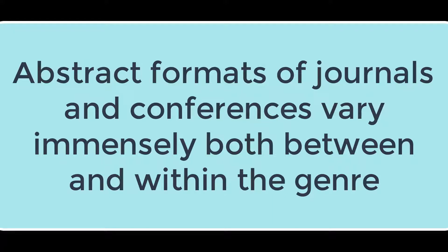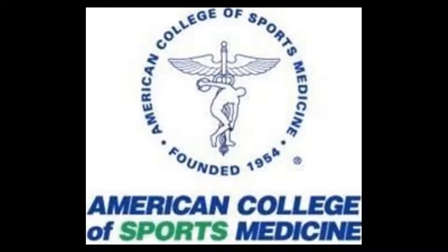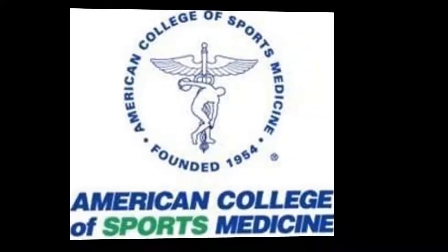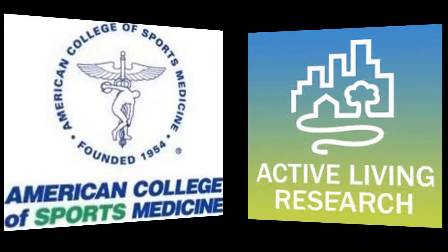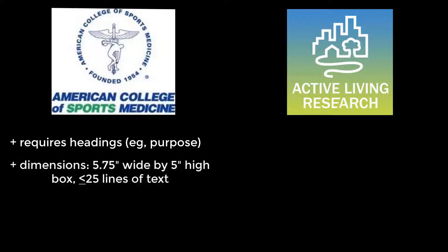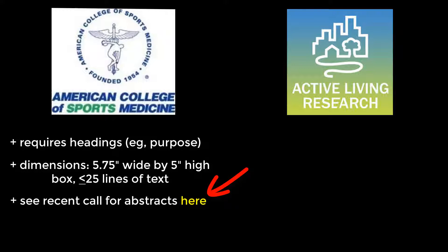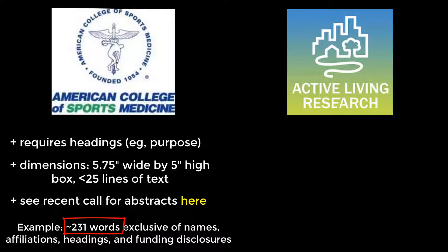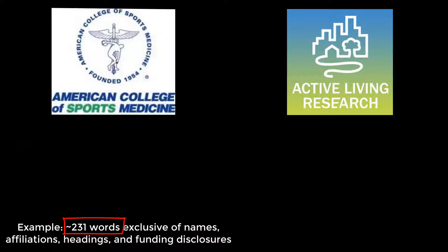For example, let's consider two conferences: the Southeast Chapter of the American College of Sports Medicine Regional Conference and Active Living Research Annual Conference. The first one requires the abstract to have headings, the dimensions of the box to be 5.75 inches wide by 5 inches high with less than 25 lines of text. You can click here to see a recent call for abstracts. An example of a submission may have 231 words exclusive of names, affiliations, headings, and funding disclosures.